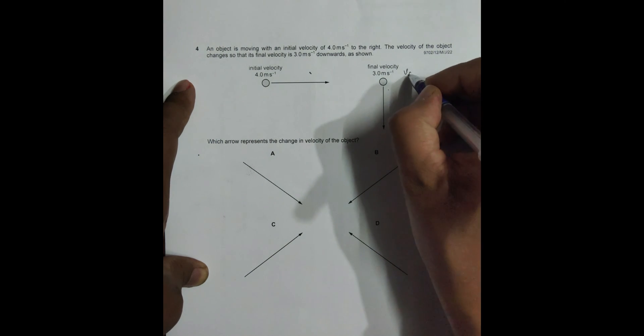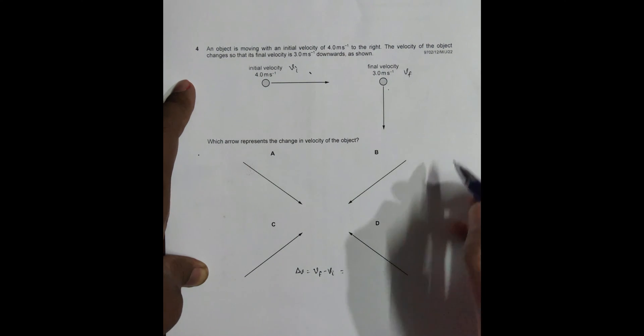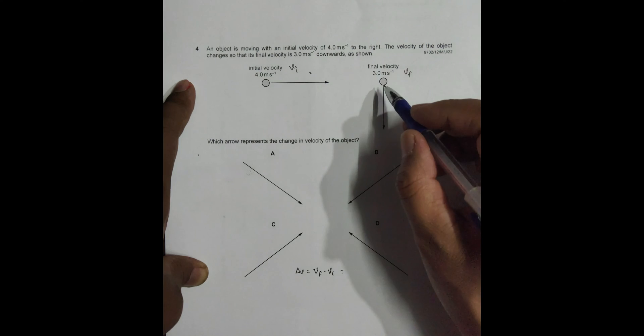So this is V final, this is V initial. So this delta V should be equal to V final minus V initial. So that means V final is okay, it is like this.